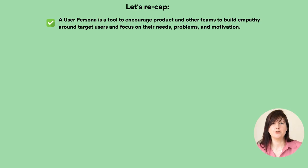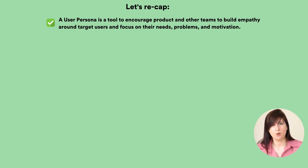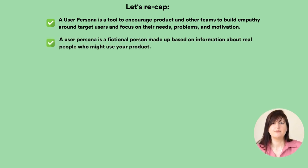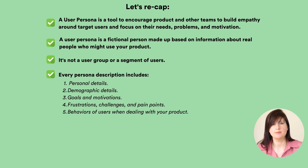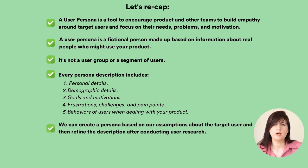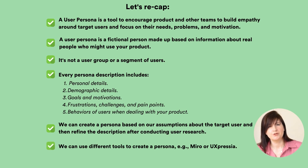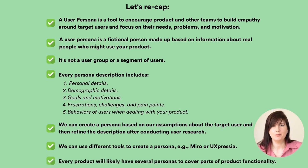Now let's recap. A user persona is a tool we use in product management to encourage product and other teams to build empathy around target users and focus on their needs, problems, and motivations. A user persona is a fictional person made up based on information about real people — it's not a user group or a segment of users. Every persona description includes personal details, demographic details, goals, motivations, frustrations, challenges, pain points, and behaviors when dealing with your product. We can create a persona based on our assumptions about the target user and then refine the description after conducting user research. We can use different tools such as Miro or UXpressia, and every product will likely have several personas to cover parts of product functionality.